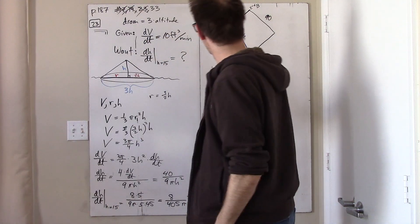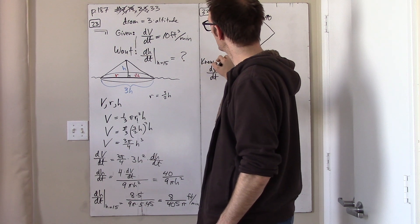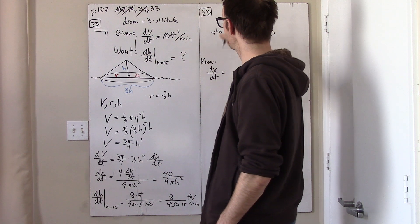In other words, dx dt is, this is what we know, is that dx dt is 28 feet per second.